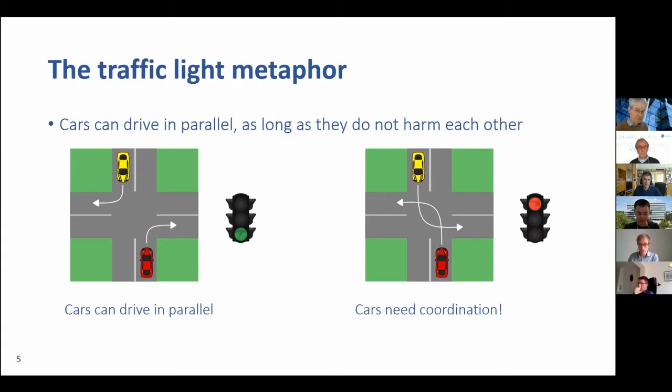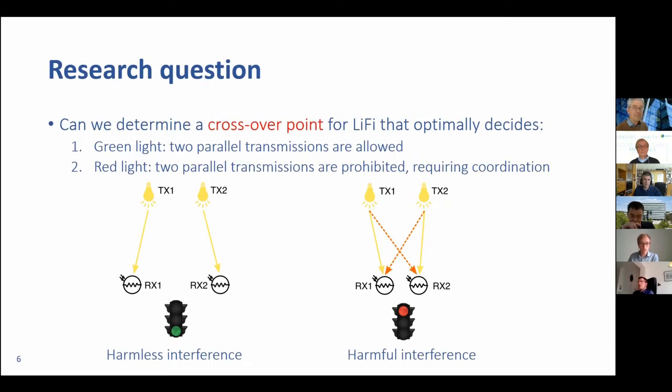This brings me to the research question of this work. Can we determine a crossover point for Li-Fi that optimally decides when we have green light and when we have red light? Green light means we can allow two parallel transmissions, because the interference among them is quite limited. Whereas on the right hand side, the interference from the transmitter is harmful for the other receiver, and therefore we cannot tolerate them operating at the same time.